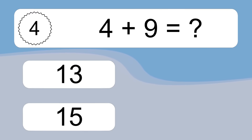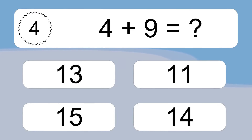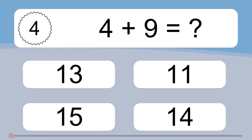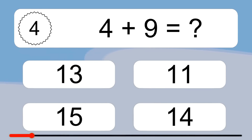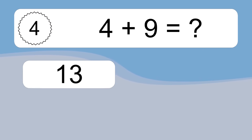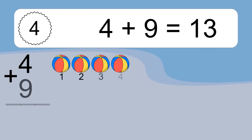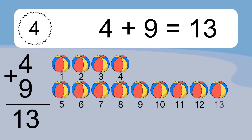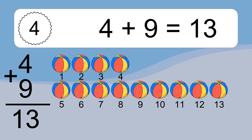4 plus 9 equals what? 4 plus 9 equals 13. Let's count it: 1, 2, 3, 4, 5, 6, 7, 8, 9, 10, 11, 12, 13.